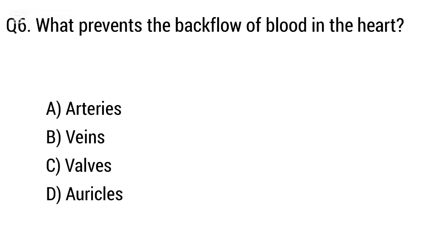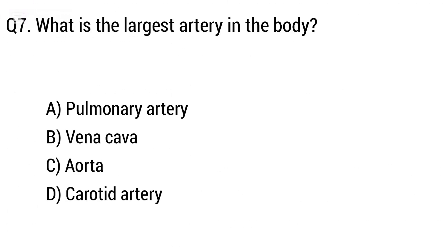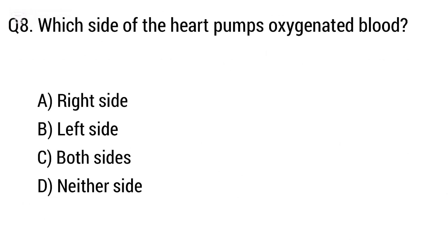Question 6: What prevents the backflow of blood in the heart? Option A: arteries, B: veins, C: valves, D: arterioles. The right answer is option C, valves. Question 7: What is the largest artery in the body? Option A: pulmonary artery, B: vena cava, C: aorta, D: carotid artery. The right answer is option C, aorta.